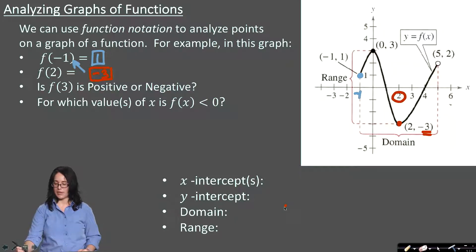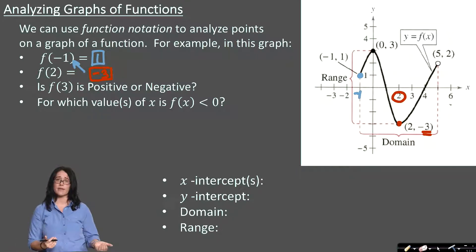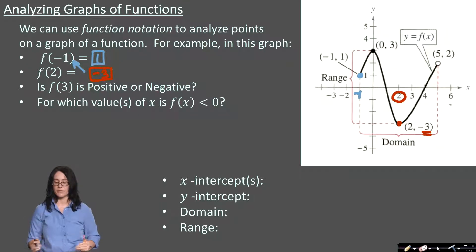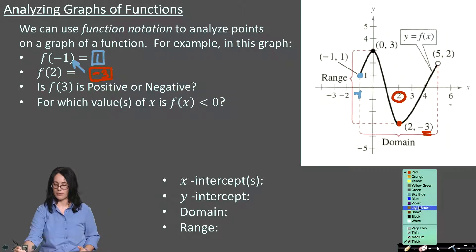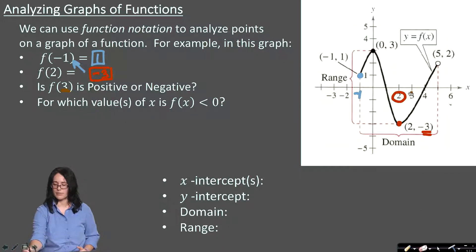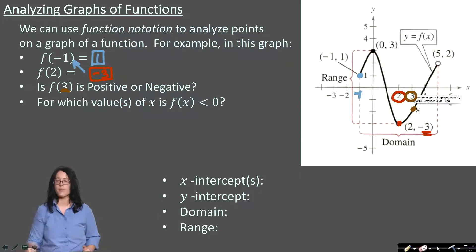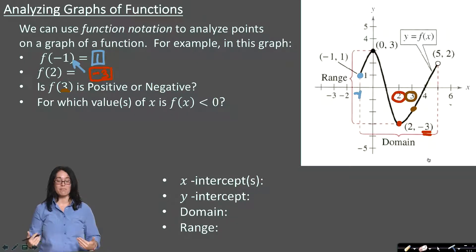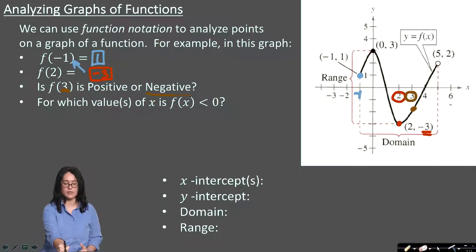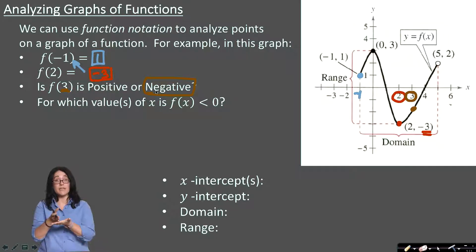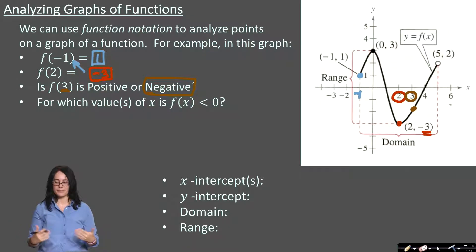The next question asks: is f of 3 going to be positive or negative? Well, f of 3 is saying what is the output when the input x is positive 3. When x is positive 3, that location on the graph shows the function has an output below the x-axis. We're not told exactly what that point is, but it's below the x-axis, meaning the output is negative in that situation.